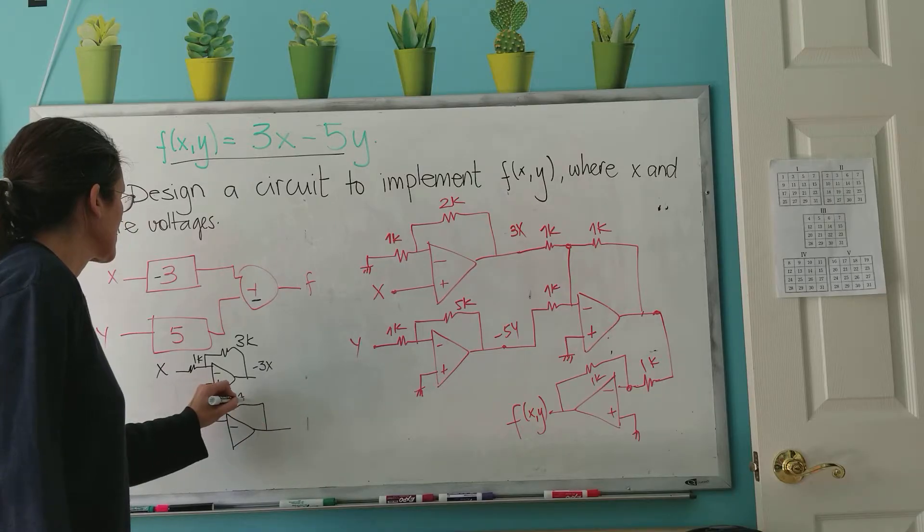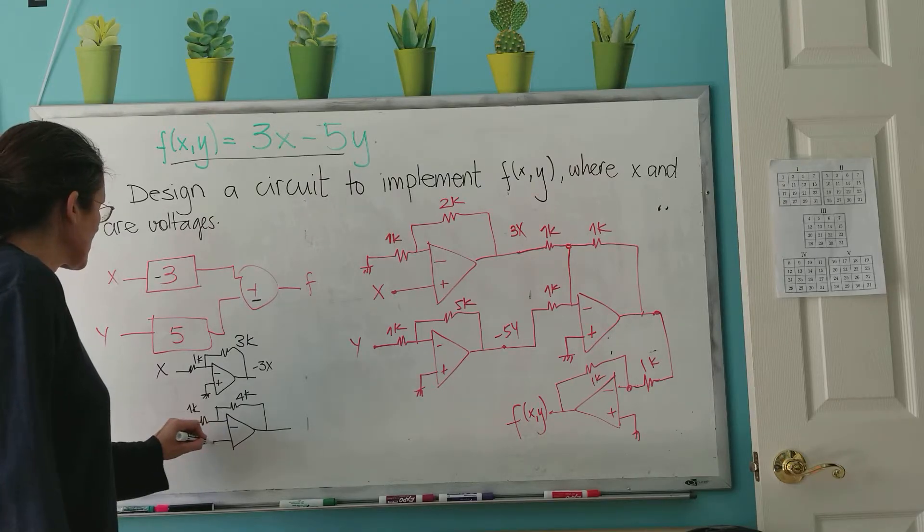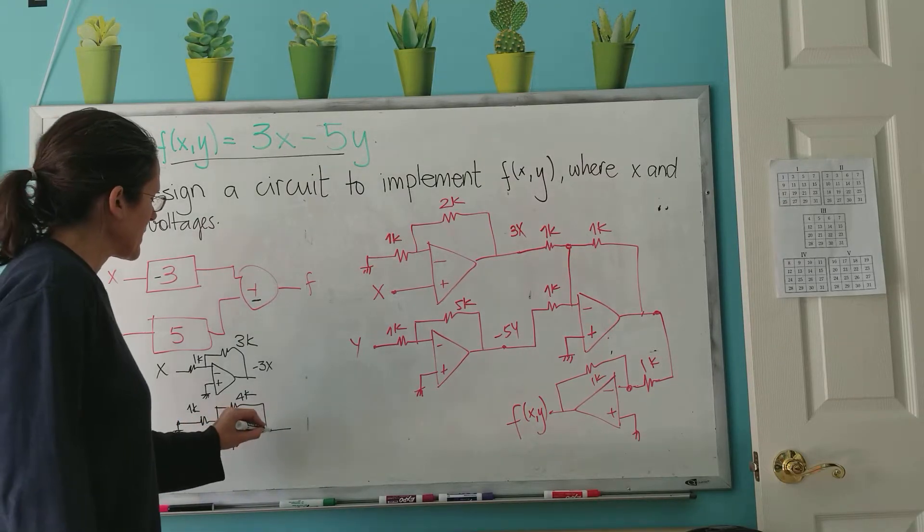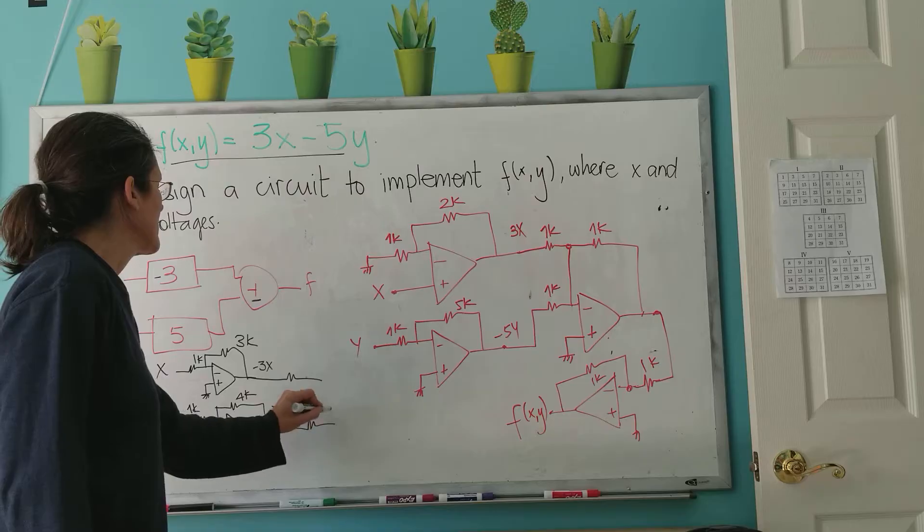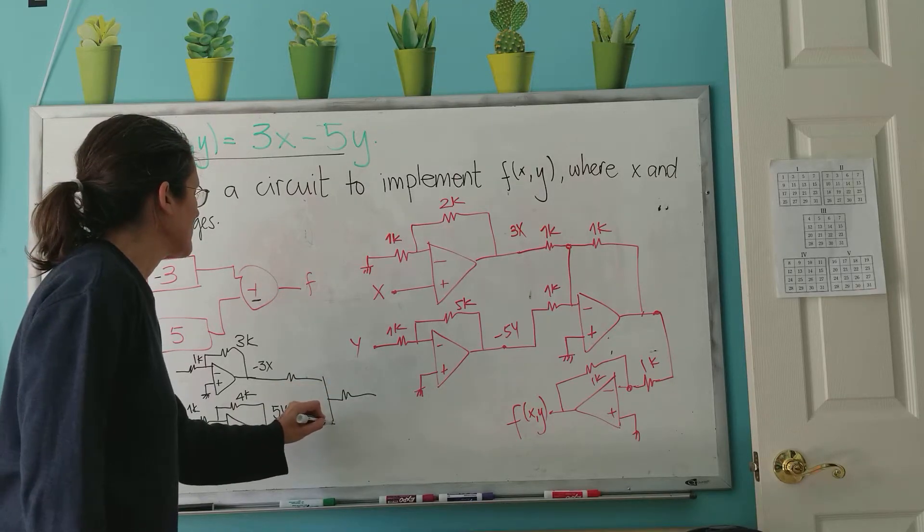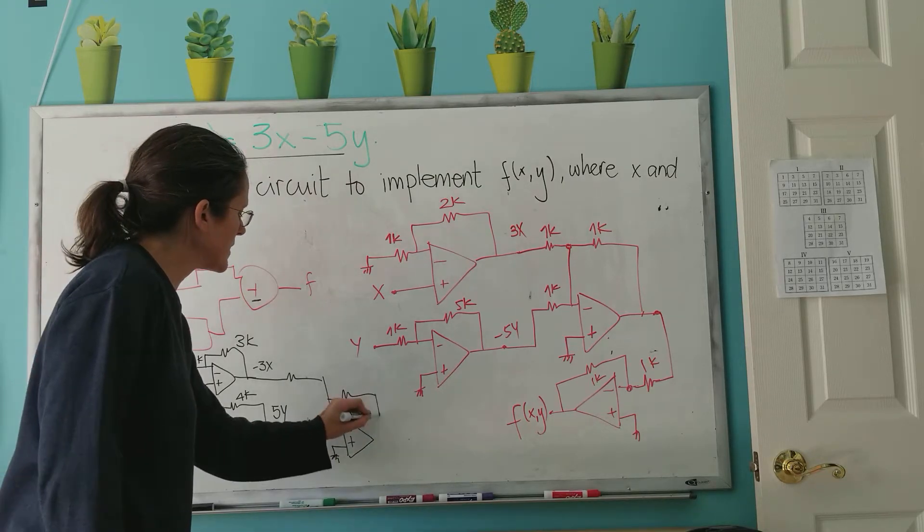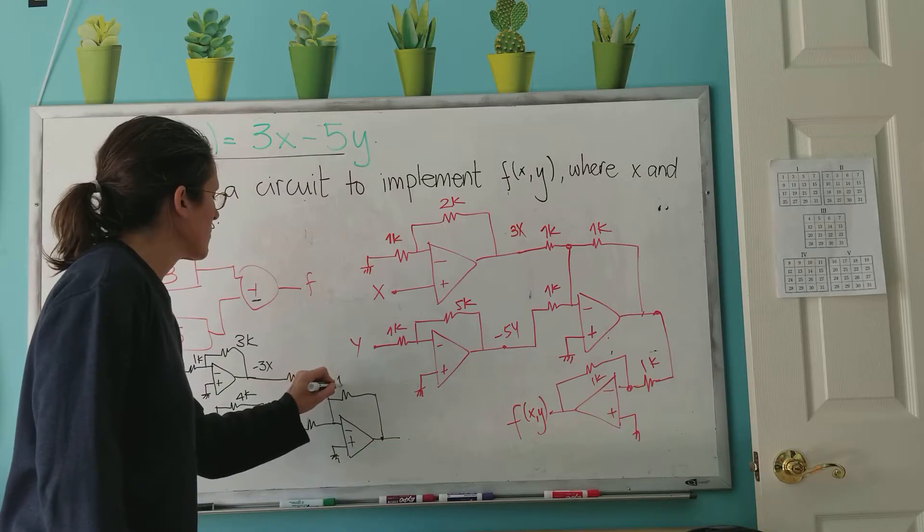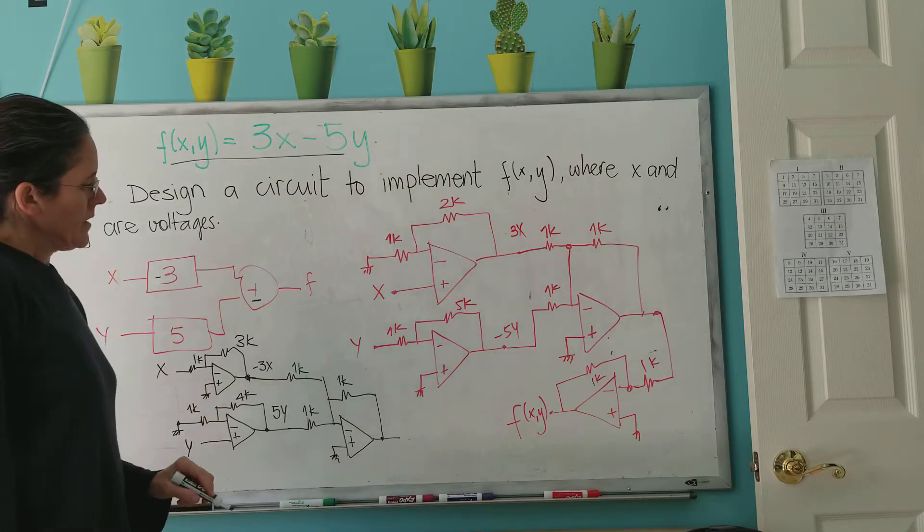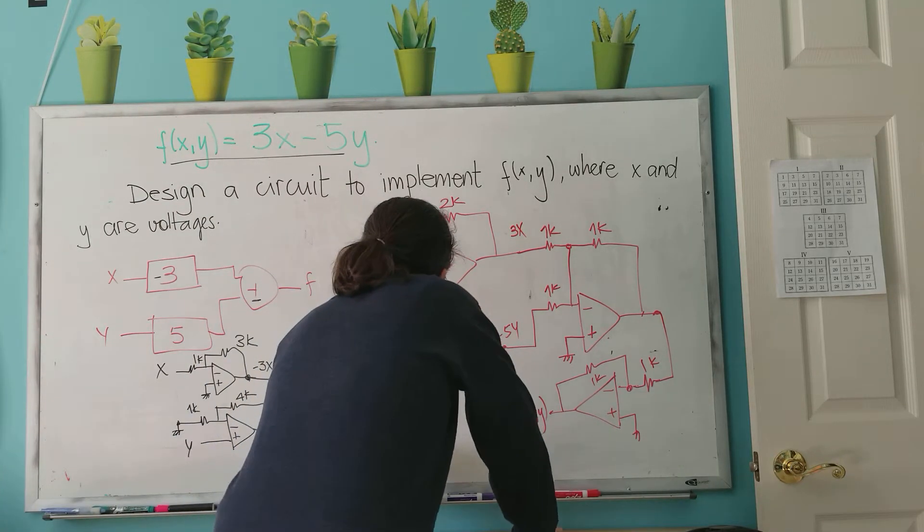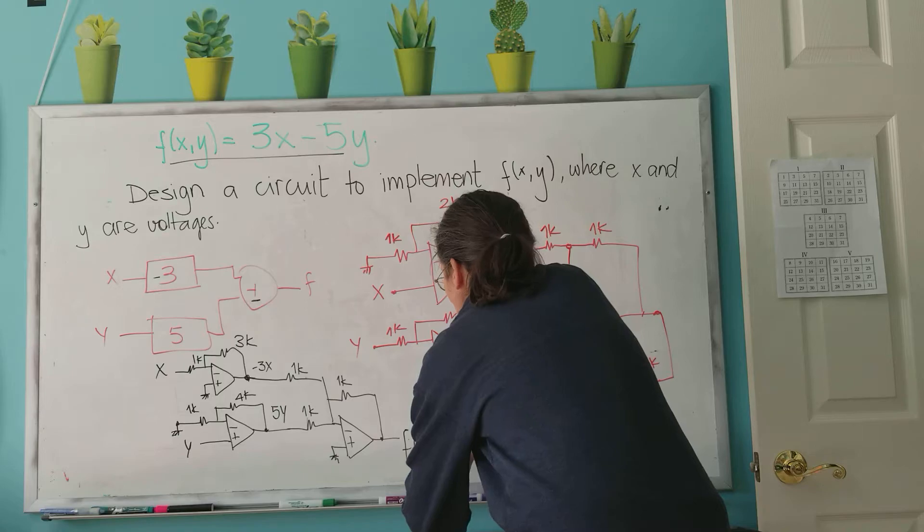In the second one, I'm going to need a 4k and a 1k here, because I'm going to hook this to ground and this to y, so that here I have 5y. And now I can use this as the summing amplifier - 1k, 1k, 1k - and here is my f(x,y). It's 3x - because it's into the negative input - minus 5y.